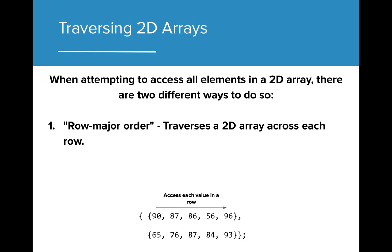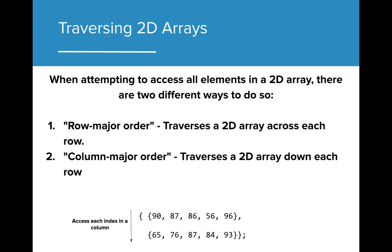The first way is row major order. Row major traversals traverse the 2D array by accessing each value in a row before moving to the next row. The other way is column major order. Column major searches each column down all rows before moving to the next column. In this lesson, we are going to take a deeper look into how we can traverse 2D arrays in both column and row major order.